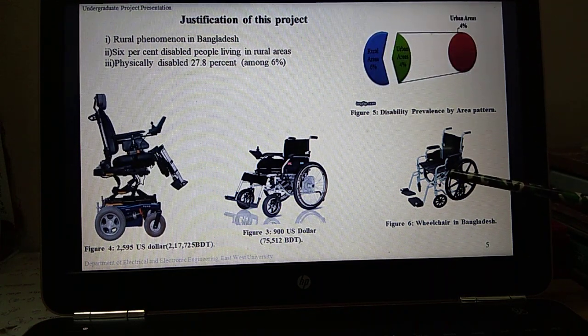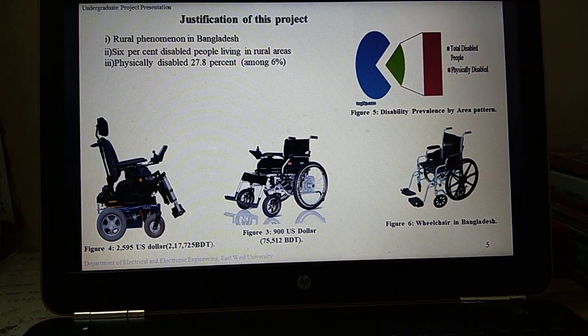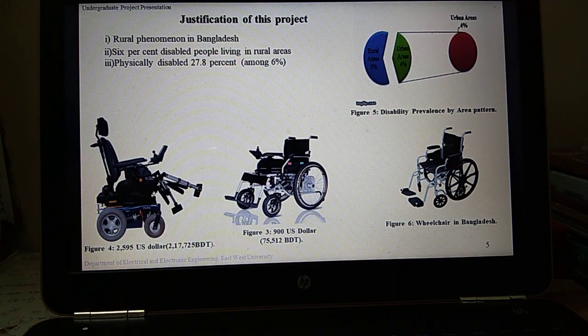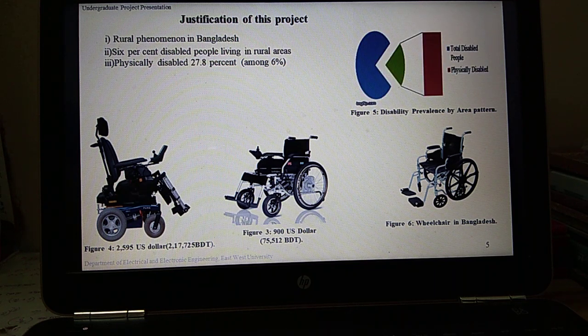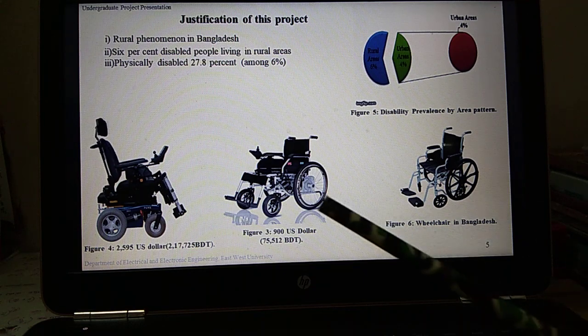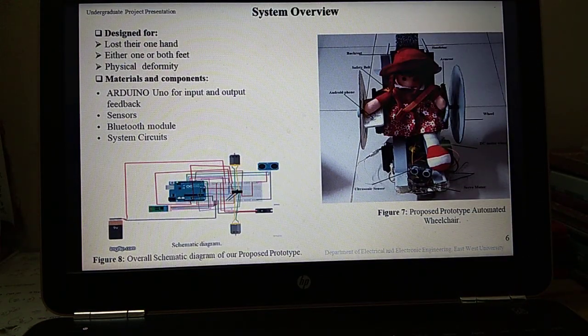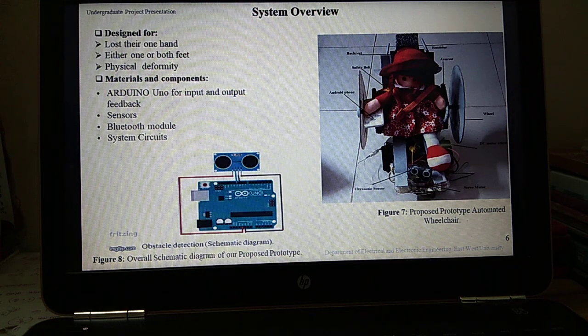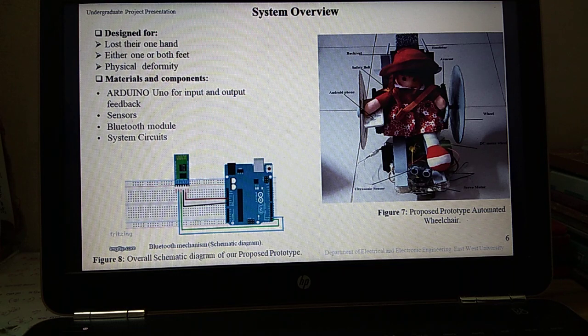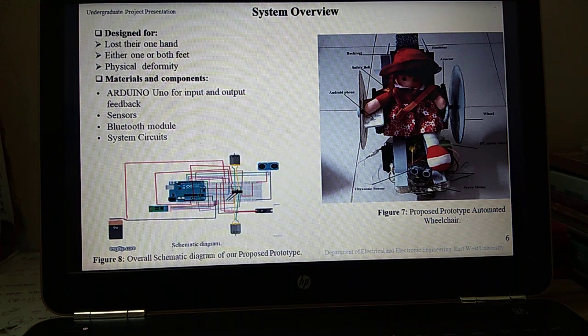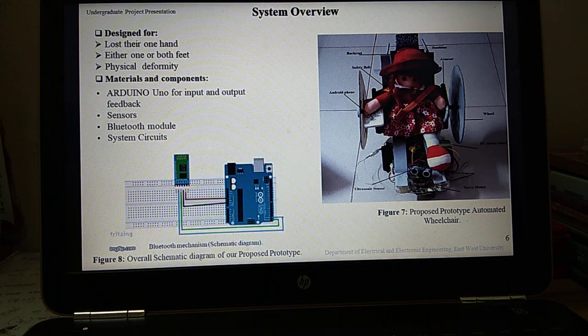Similar types of manual wheelchairs are available in Bangladesh, so we tried to design a prototype so that in future by using this type of manual wheelchair we can make an automated wheelchair with more features but at an affordable price. Persons have different types of physical disabilities, but this prototype is designed for those people who have lost their one hand, lost sensation partly or wholly of one hand, lost either one or both feet, or have physical deformity and abnormality.